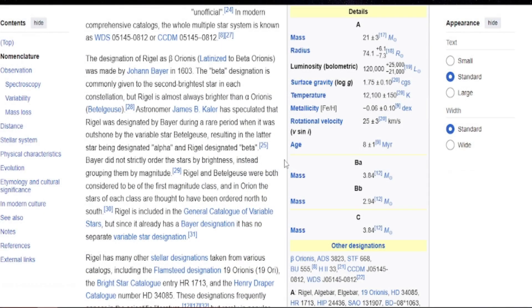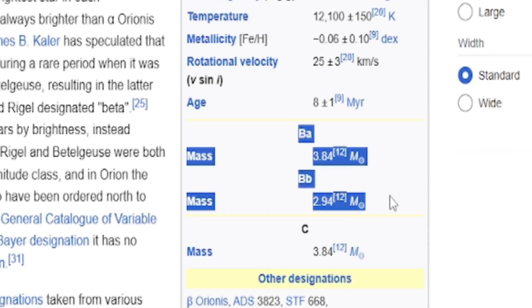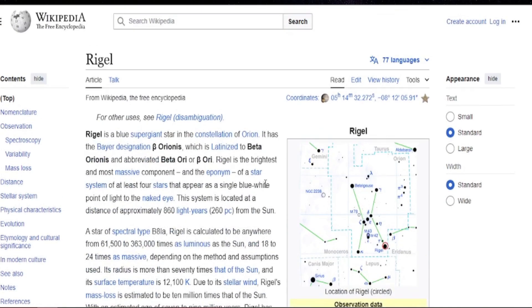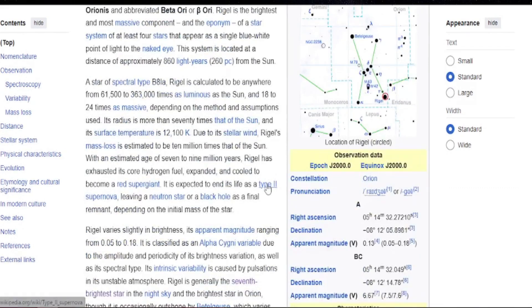And it's also a binary system. Most people only think about the main supergiant star, but there are other stars and in their own rights are all big B class stars as well. Although main sequence rather than supergiant, like the A star. Both BA and BB are, and I think C as well, B class main sequence stars. So this whole system is really powerful, but obviously the three smaller stars get dwarfed by the giant.